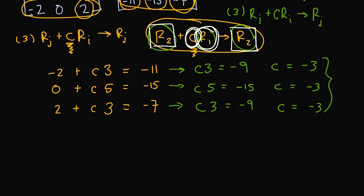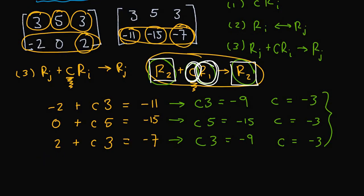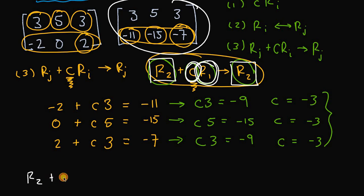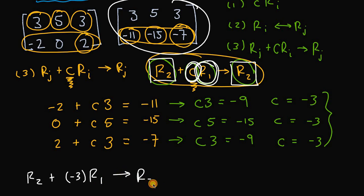So the elementary row operation being performed to get this new matrix is: we take row two of the original matrix and add negative three times every element of row one to get the new R2 in the new matrix.